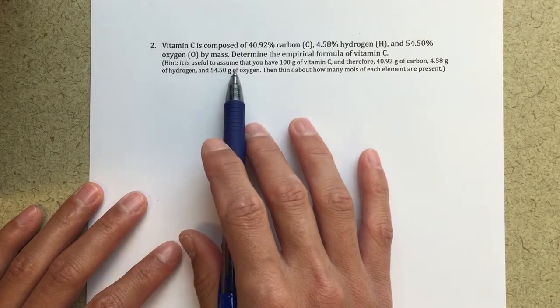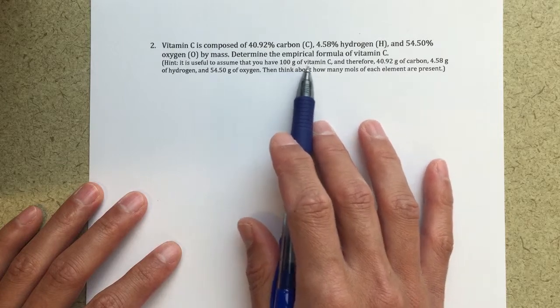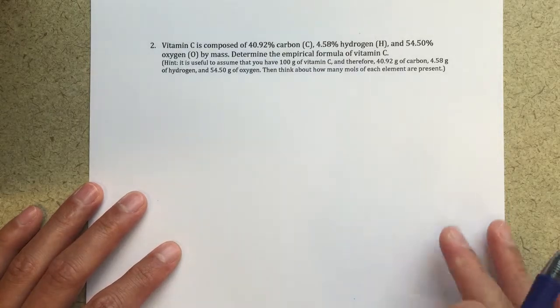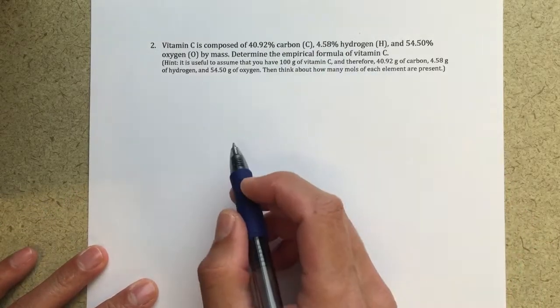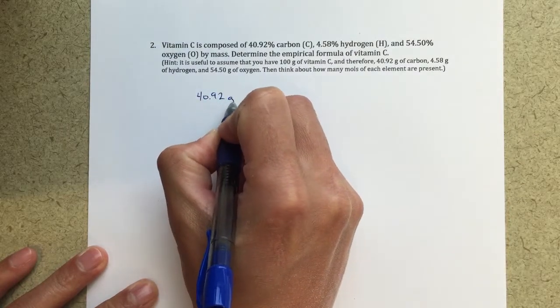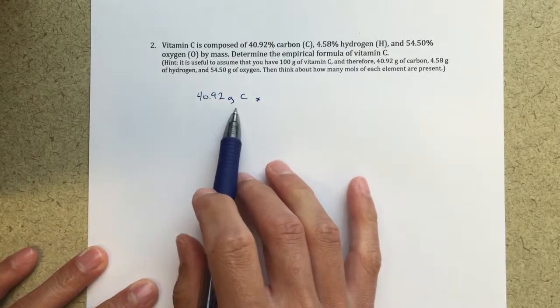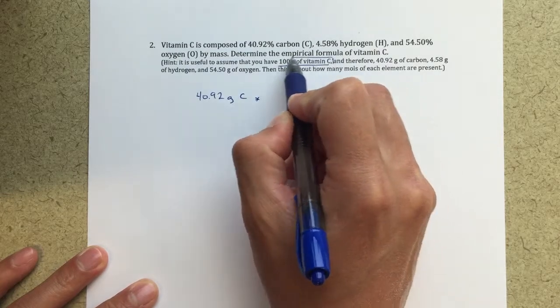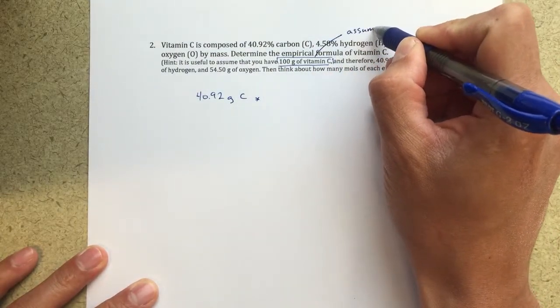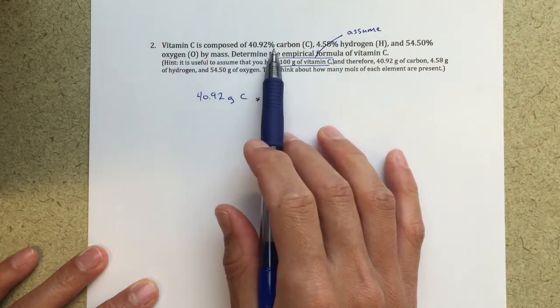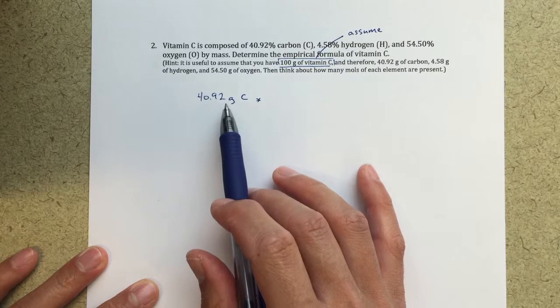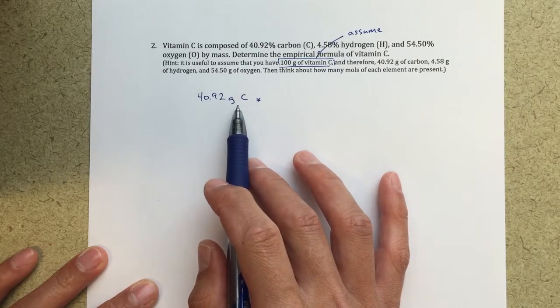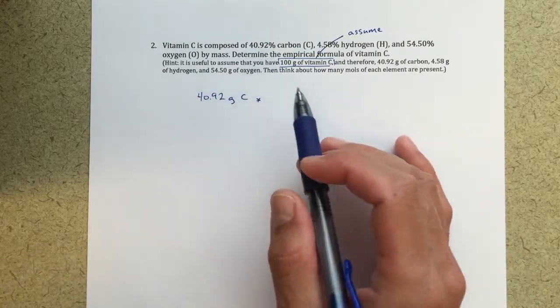The hint says it's useful to assume you have 100 grams of vitamin C. This simplifies the calculations and gets us going in the right direction. If we have 40.92 grams of carbon, this comes from assuming 100 grams of vitamin C. Then these mass percentages can be translated into a mass for carbon. If I have 100 grams total, I would have 40.92 grams of carbon because it's 40.92% of the total mass.